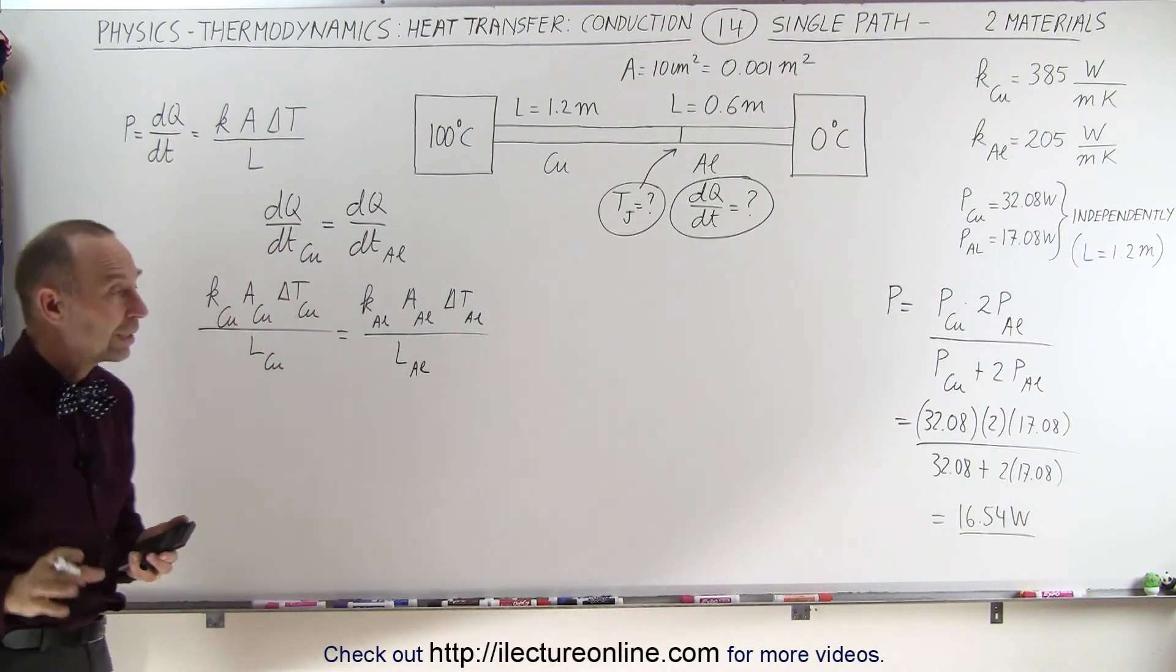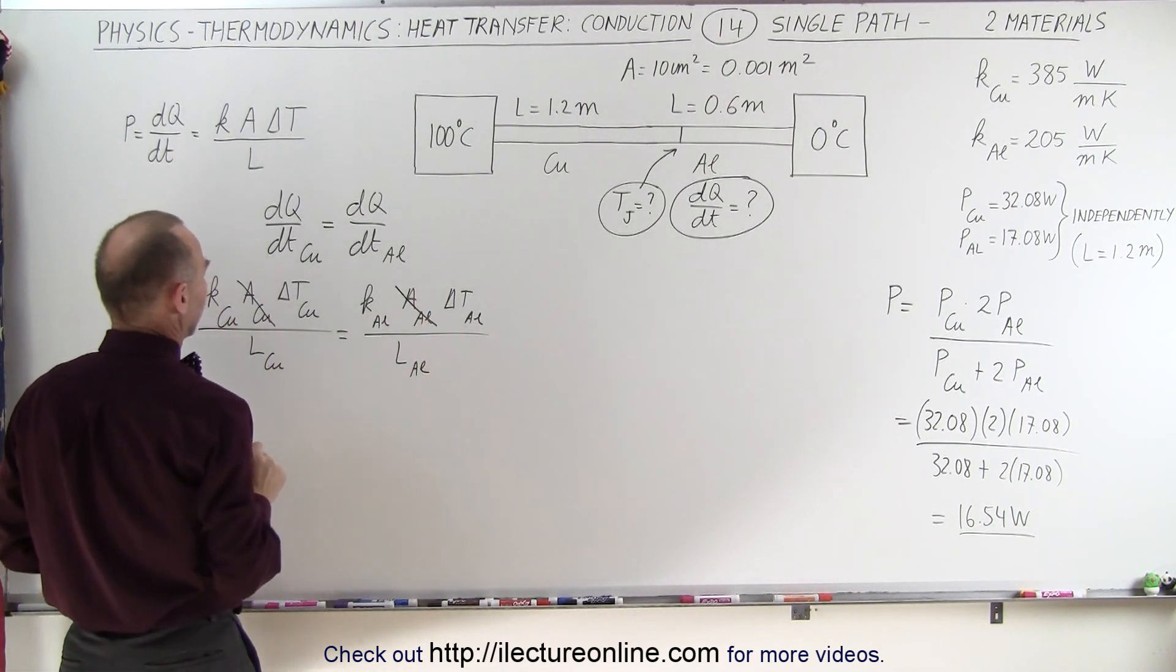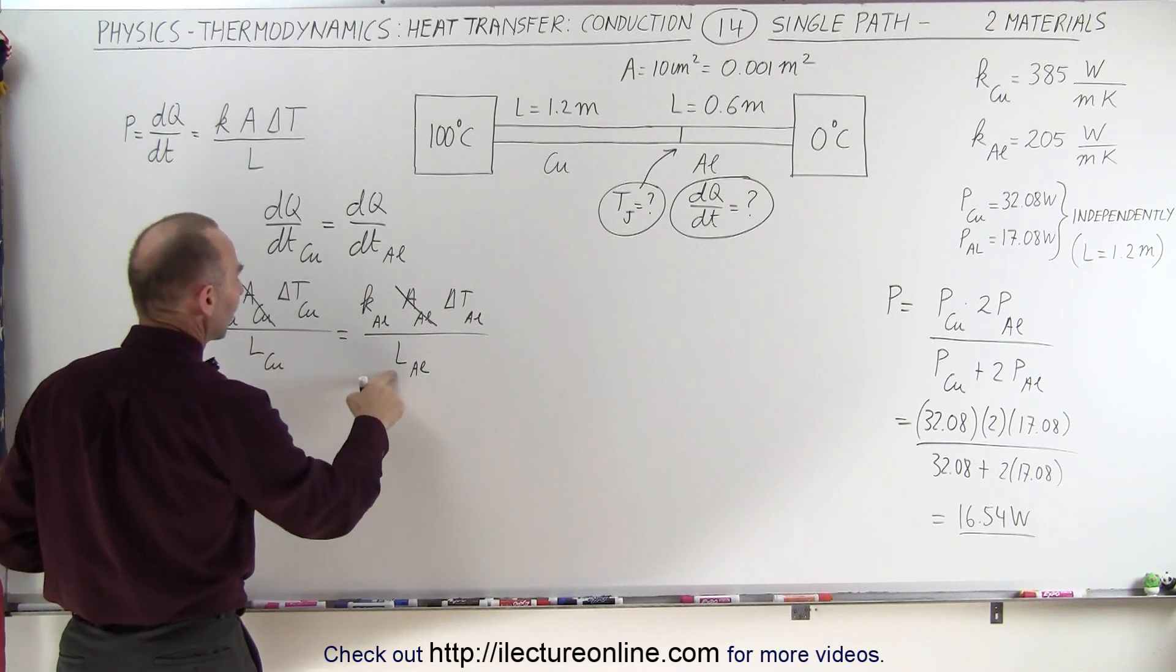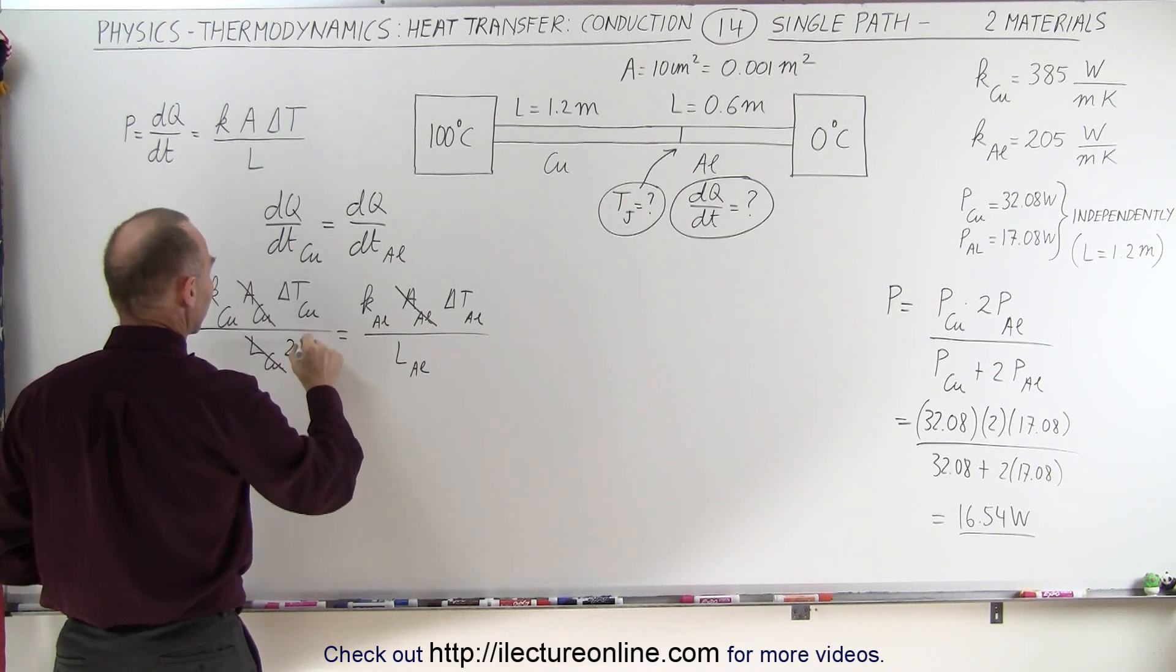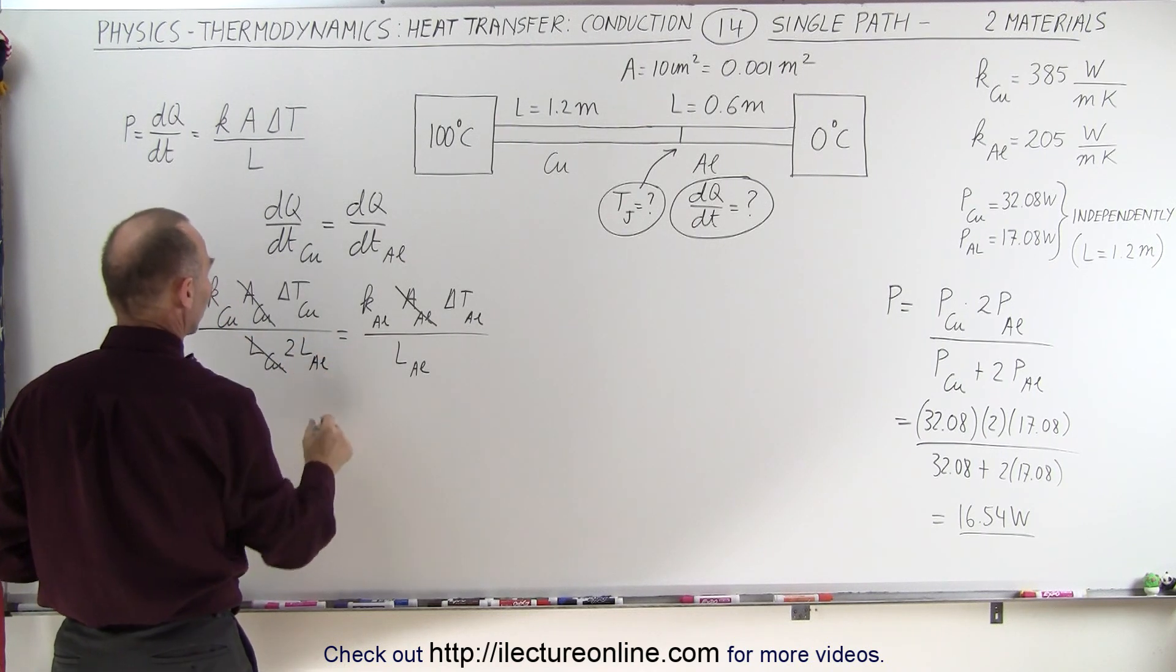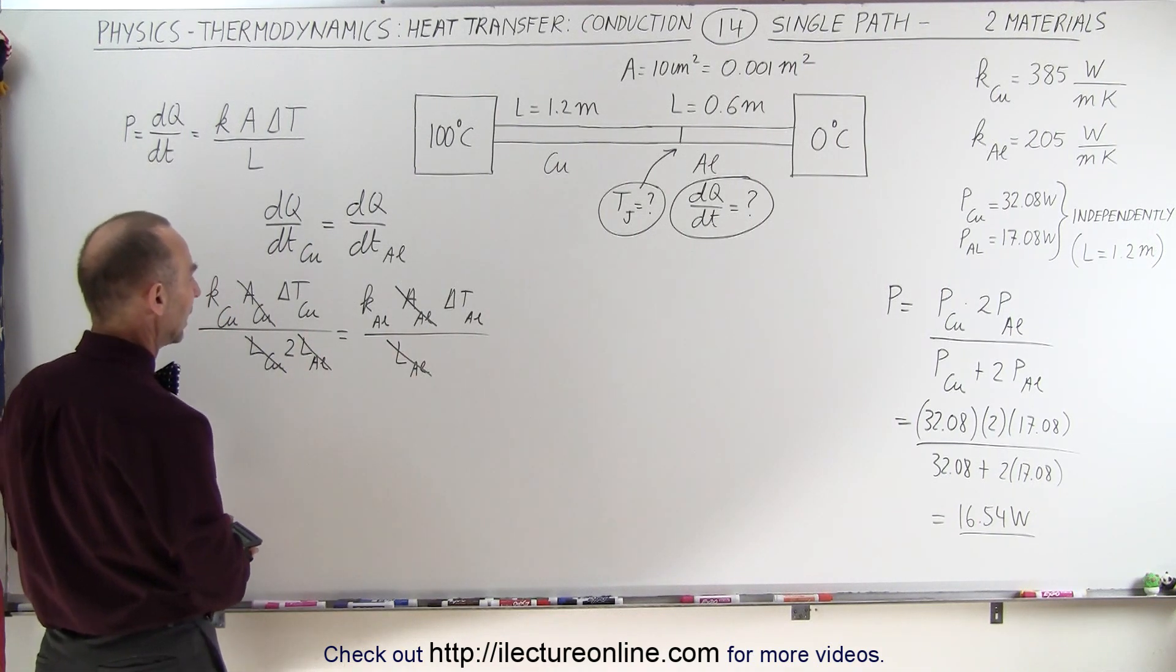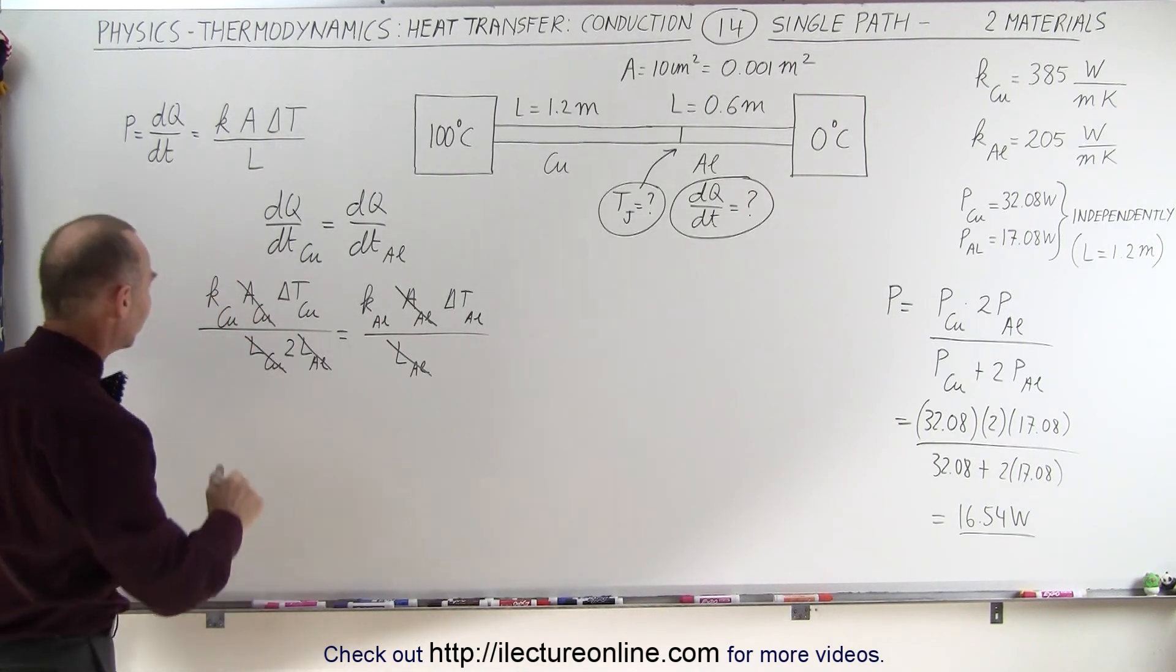Now again, we realize that the cross-sectional area of both is the same, so we can cancel that out. The length is not the same, but the length of the copper section is twice the length of the aluminum section. So we can go two times the length of the aluminum section, which means that these two now cancel out. So now we go ahead and plug in the numbers.